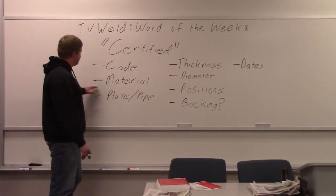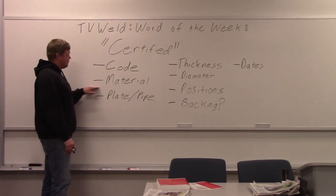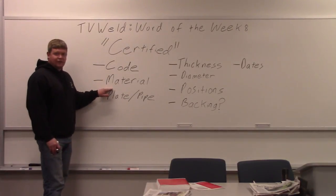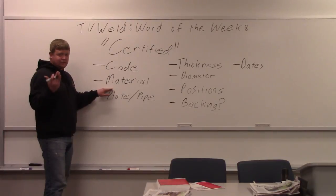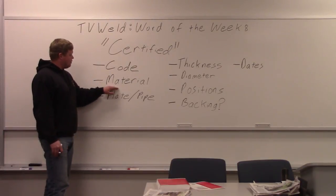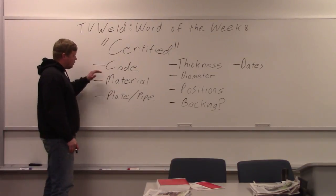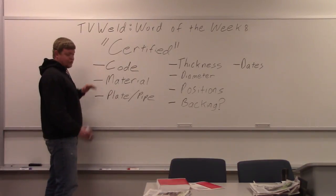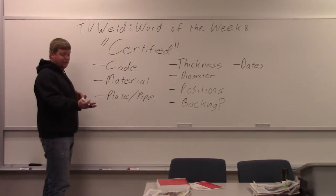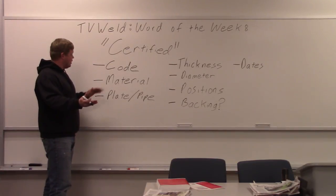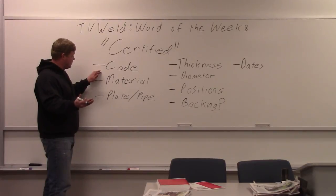Next is material. If you get certified on steel and you go out and weld stainless, it's useless. So you want to know what material and what code — that's a structural steel welding code right there, so it would be a steel material. The code would be structural steel.